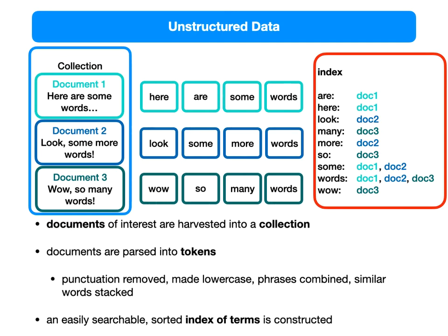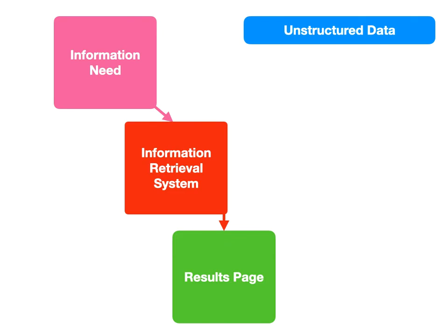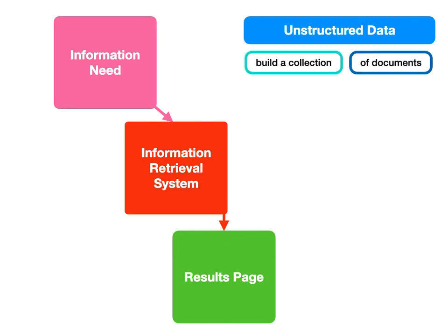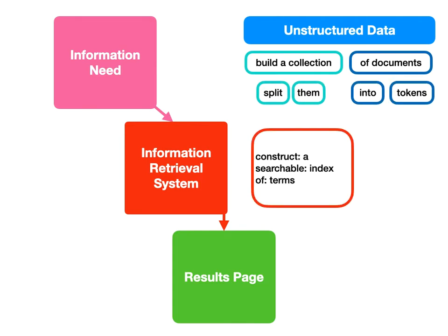This index is key — it is the key piece of the puzzle throughout the entire course: how we build them, how we search them, how we manage them. What we start with is a collection of documents, split them up into tokens, and then create a searchable index of terms. That's how we chop up collections of unstructured data.